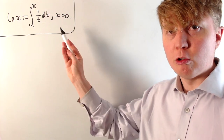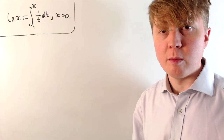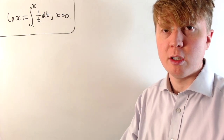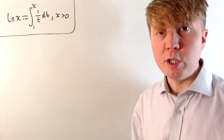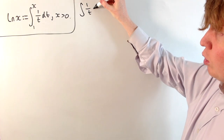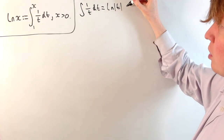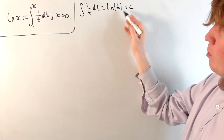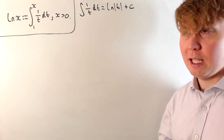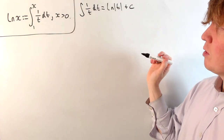We're going to explore how we can use this integral definition of the natural logarithm function to derive the laws of logarithms, and this turns out to be quite a nice exercise in using integration by substitution. To justify briefly where this definition comes from, if you have the integral of 1 over t with respect to t, you get the natural logarithm of the modulus of t plus a constant. We include the modulus because if you have the natural logarithm of a negative value, we wouldn't get a real answer, so we need the modulus if t is negative.